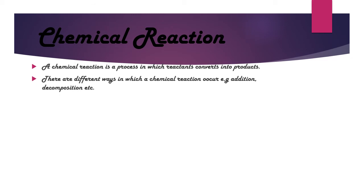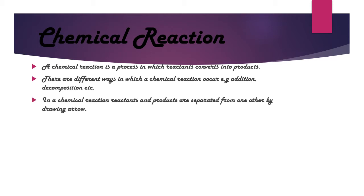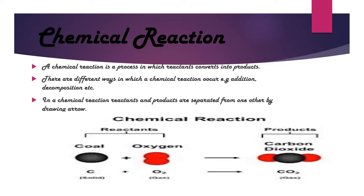There are different ways in which a Chemical Reaction occurs — Addition Reactions, Decomposition Reactions, Displacement Reactions, Double Displacement Reactions, and Neutralization Reactions. The main thing is that we have a reactant that is converted into a product. In a Chemical Reaction, reactants and products are separated by arrows, which may be single-headed or double, depending on which type of reaction is occurring.